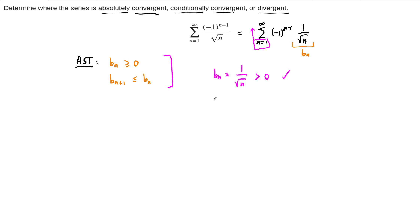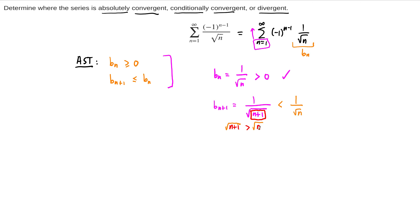The next question is: is this thing decreasing? Let's consider b sub n plus 1, which is equal to 1 over the square root of n plus 1. Our n is a positive number counting upward, so it's getting bigger. If we take n plus 1 under the square root, n plus 1 is greater than n. Since the square root function is an increasing function, the square root of n plus 1 is also bigger than the square root of n. If this denominator is larger for n plus 1, then the entire fraction is smaller. So we've shown that b sub n plus 1 is always less than b sub n.